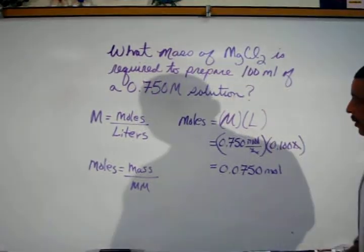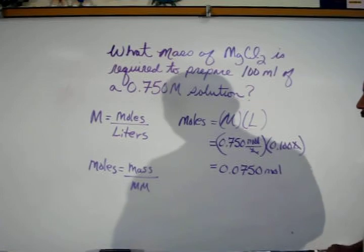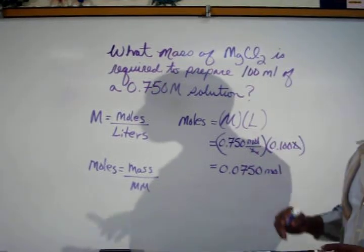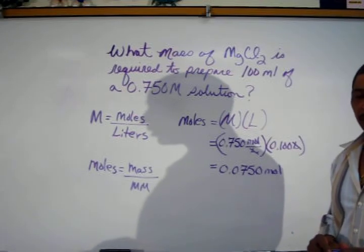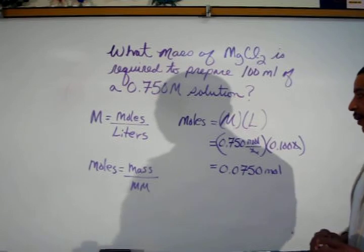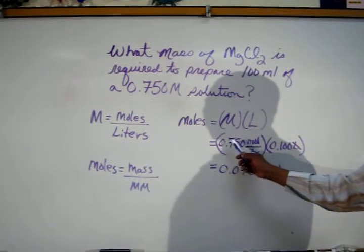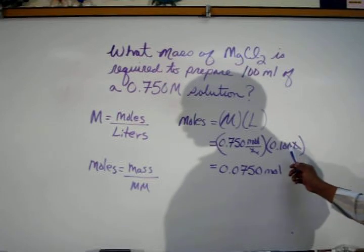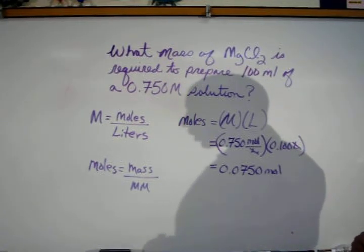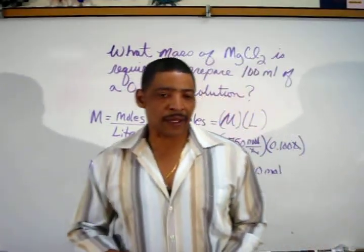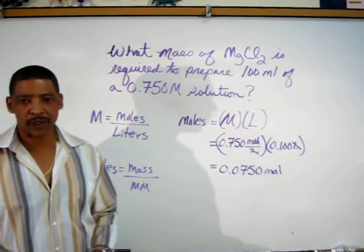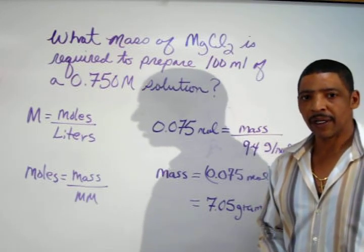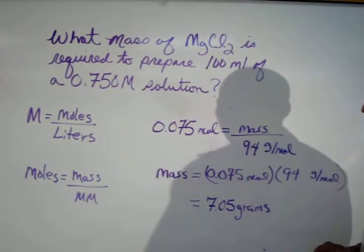Now simply insert the data from the practice problem, where we are given 0.750 molar and 100 milliliters. Clearly, the milliliters should be converted to liters. This will yield the final calculation of 0.750 mole per liter multiplied times 0.100 liters. In this calculation, the liters will clearly cancel out, yielding a final answer of 0.0750 mole. Now that the number of moles have been determined, complete the calculation, where the number of moles are equal to 0.075 mole.